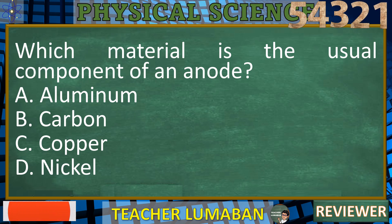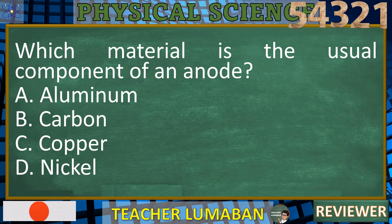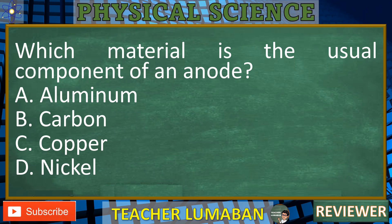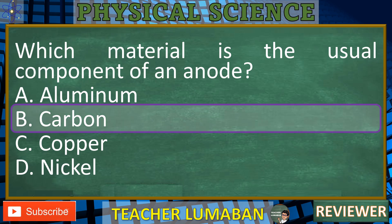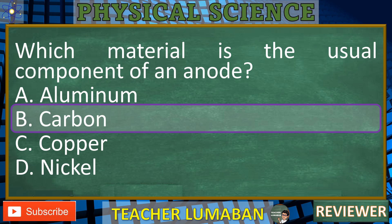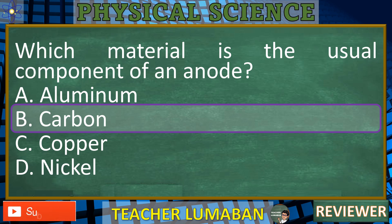The usual component of an anode depends on the specific type of device or application. However, in many common applications such as in dry cell batteries, the typical material used for the anode is B. Carbon. In a standard zinc-carbon battery, the anode is generally made of zinc, and the cathode is a mixture of manganese dioxide and carbon, usually in the form of graphite. In lithium-ion batteries, the anode is typically made of graphite, a form of carbon. Thus, the most commonly used material for anodes in a broad range of applications is carbon.